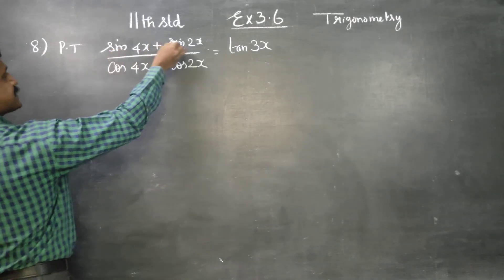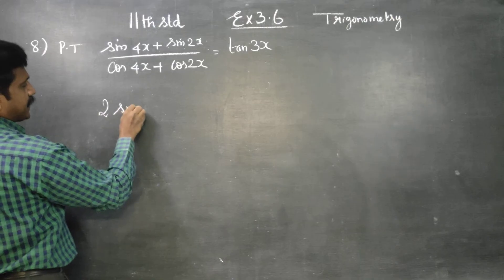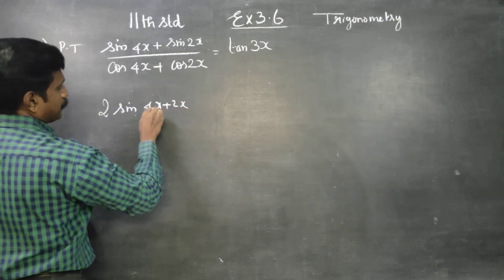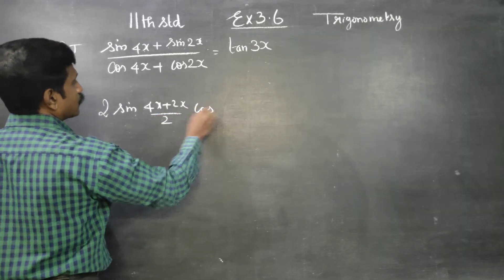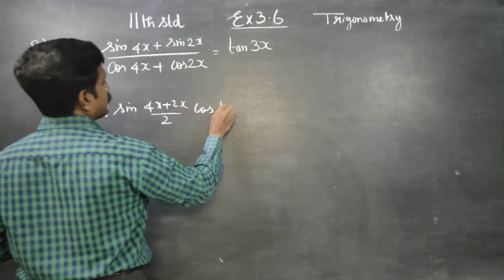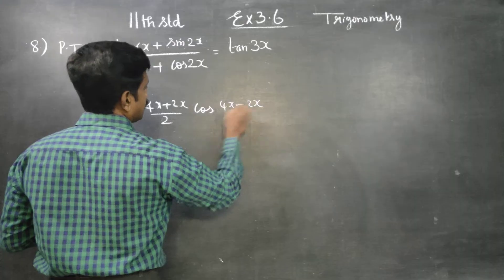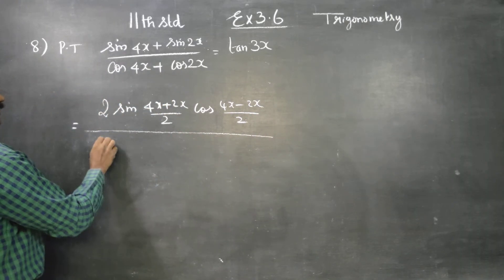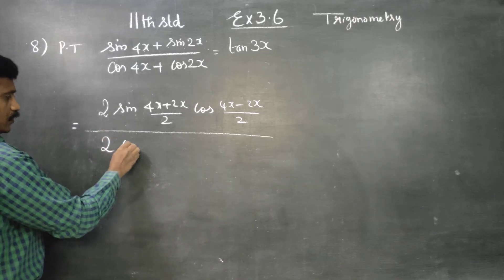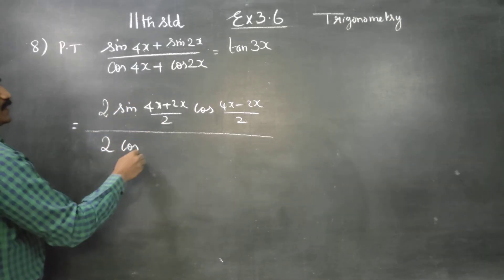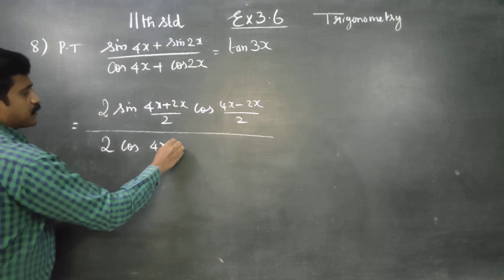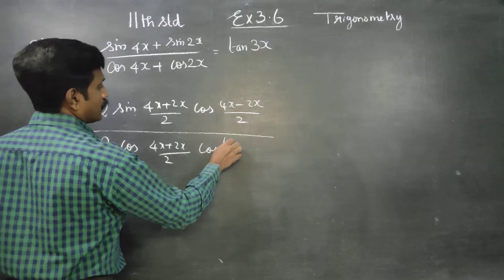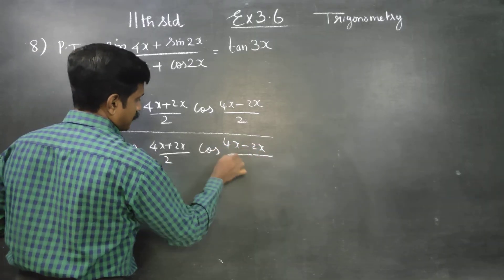Sin C plus sin D is 2 sin((C plus D) by 2) cos((C minus D) by 2), divided by cos C plus cos D is 2 cos((C plus D) by 2), which gives us (4x plus 2x) by 2, cos((4x minus 2x) by 2).